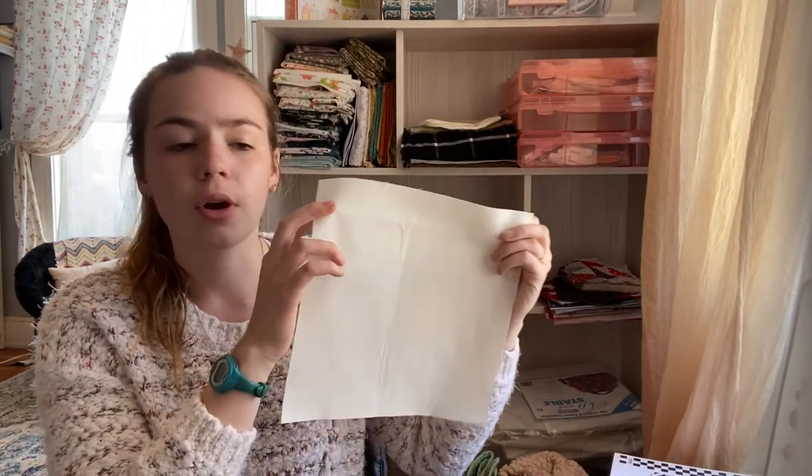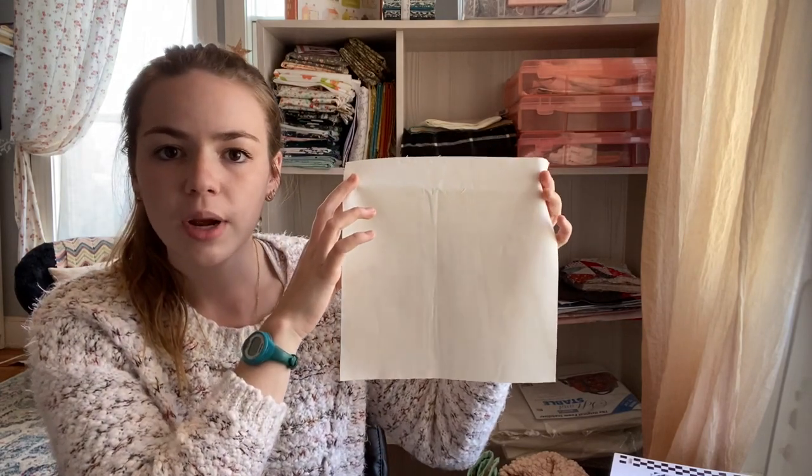You're also going to want a contrast fabric so you can either again like I said pre-cut your own 10 inch squares out of a lighter or contrast fabric or you can also get a solid, a Bella solids layer cake.